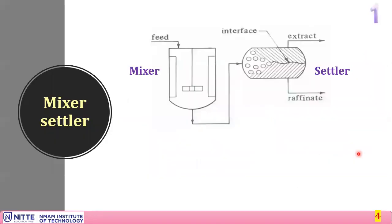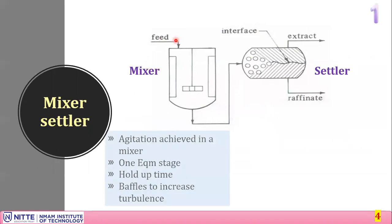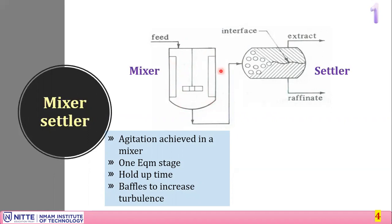The mixer-settler, as the name says, has a mixing unit and a settling unit. In the mixing unit, an agitator and baffles are present. The agitator mixes the feed solution and solvent together — without it, they would separate into two layers. One equilibrium stage is achieved inside one mixer. The mixture is held for a given time — maybe 10, 20 minutes, or an hour — called the hold-up time, during which one equilibrium stage is expected to be achieved.